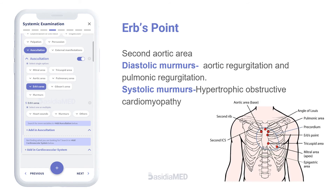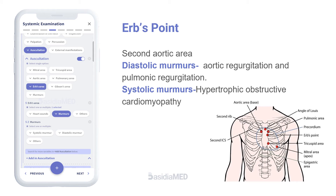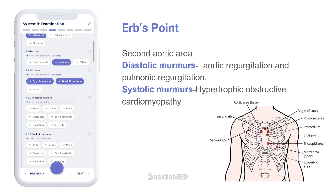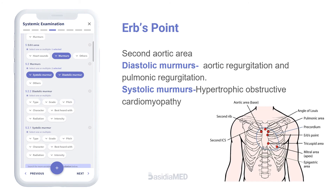Erb's area, also called the second aortic area. Diastolic murmurs heard in this region could be suggestive of aortic regurgitation and pulmonic regurgitation. Systolic murmurs heard here are suggestive of hypertrophic obstructive cardiomyopathy.